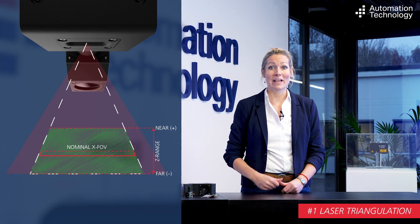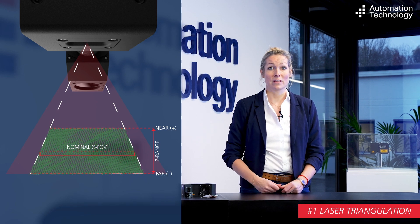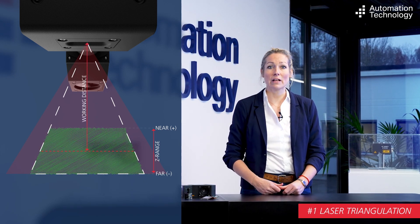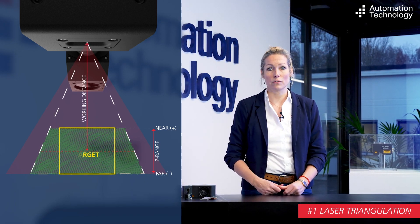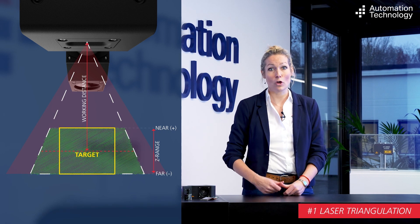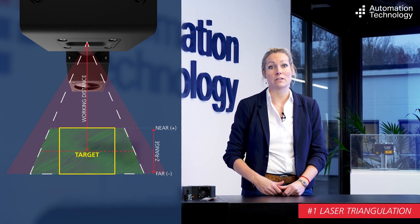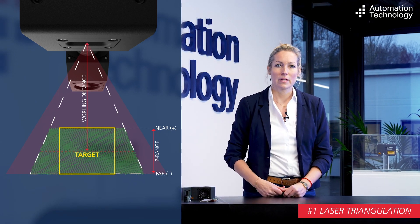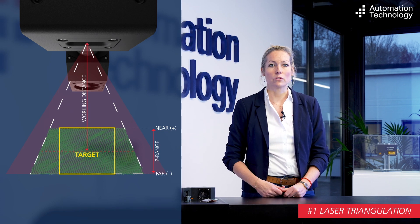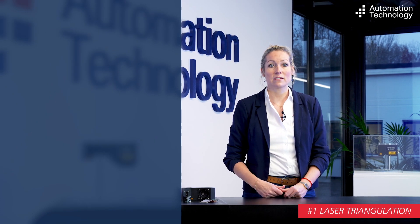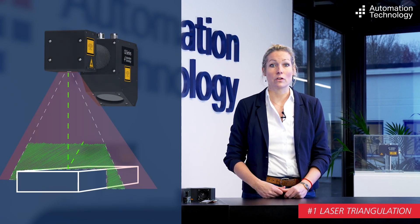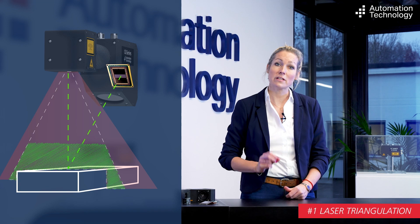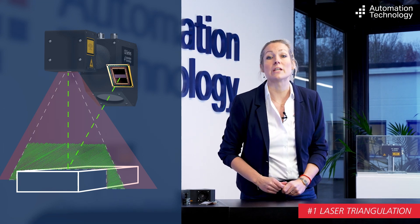The distance between the X field of view and the sensor housing is called the working distance. The relevant target surface should be at the nominal working distance for achieving the best results. The sensor module, which contains the image sensor and optics, captures the laser profile and generates a 2D image.